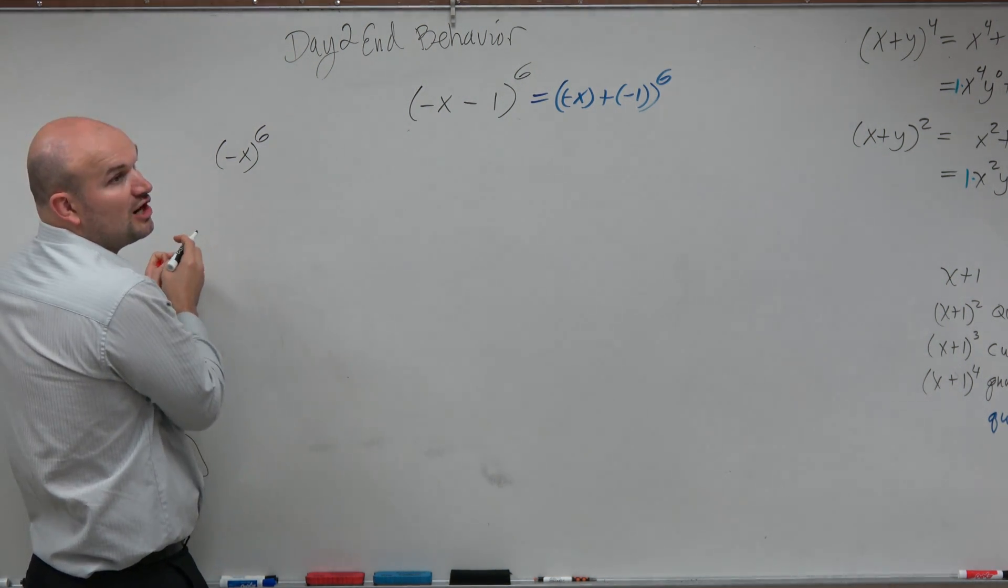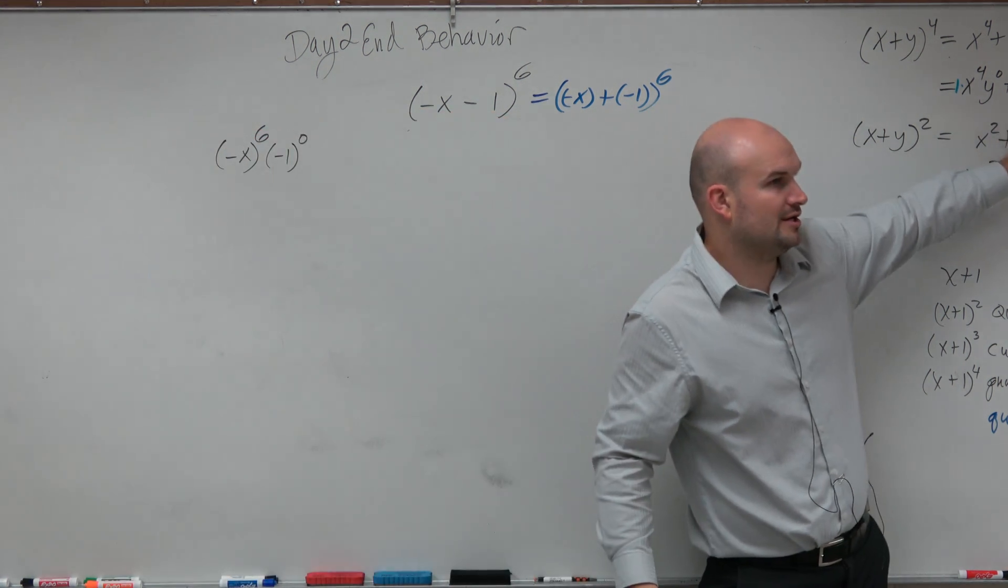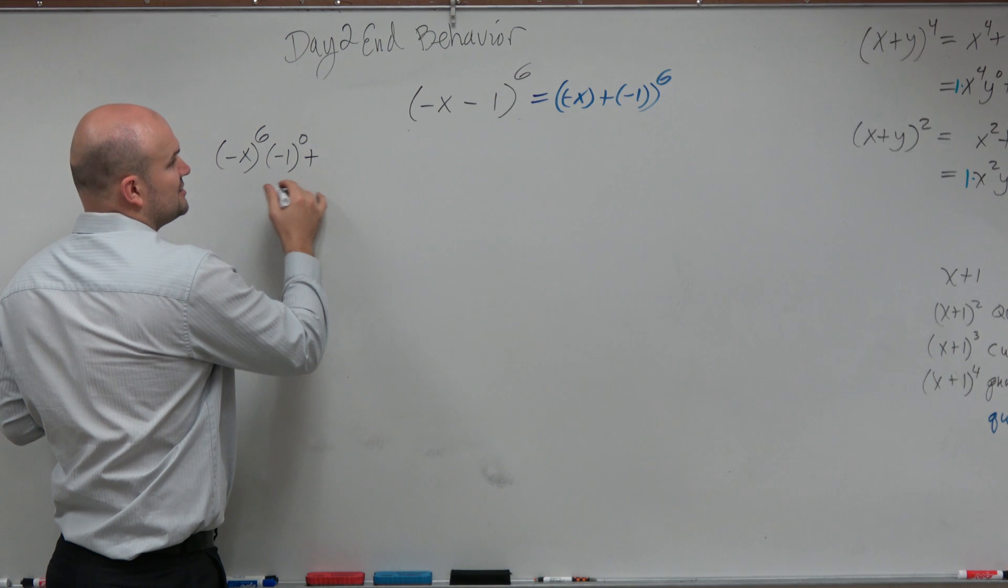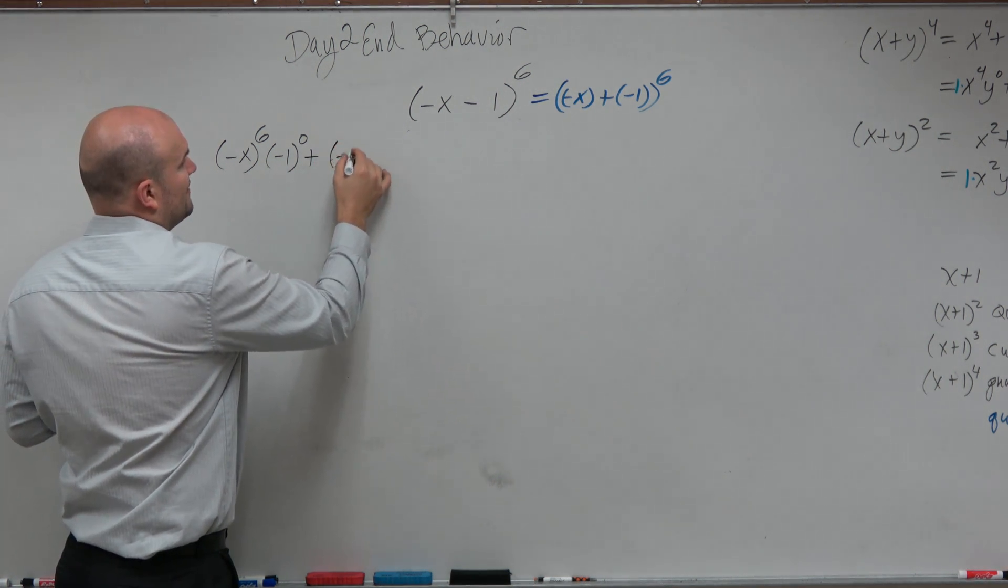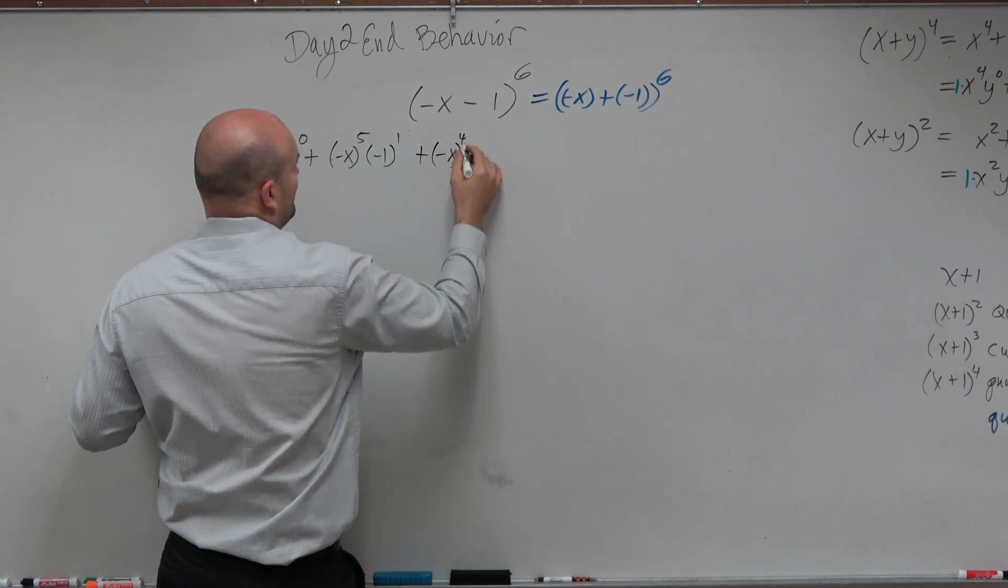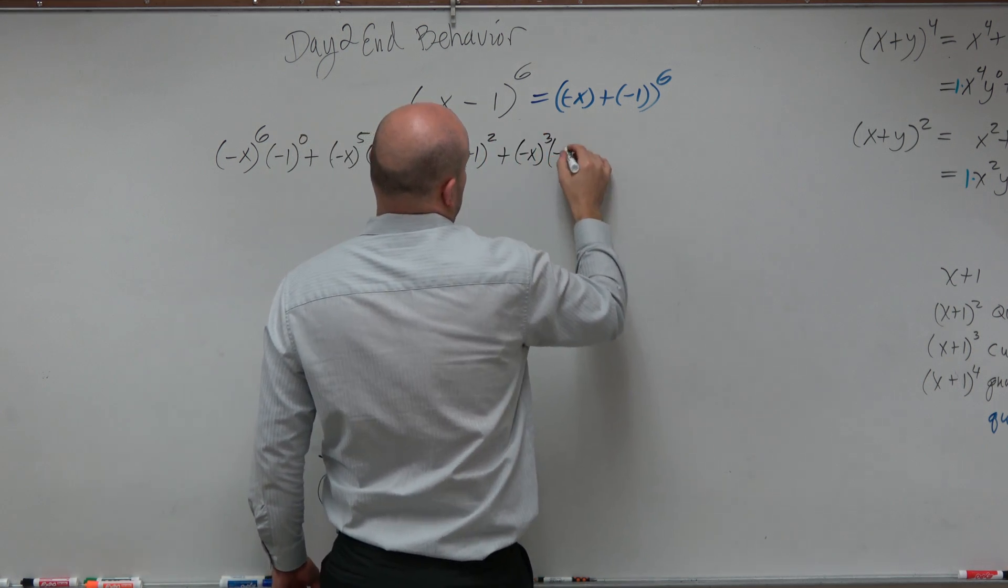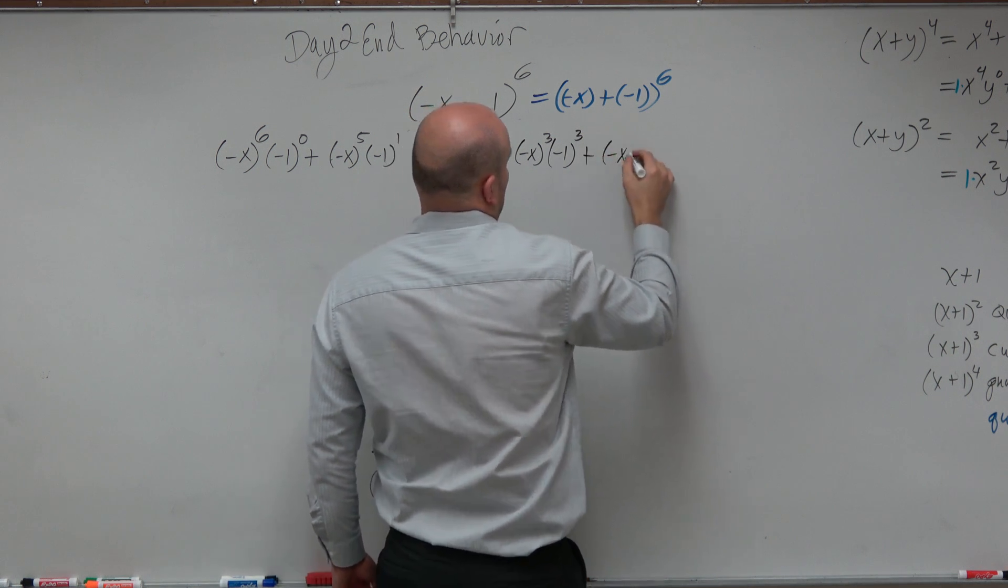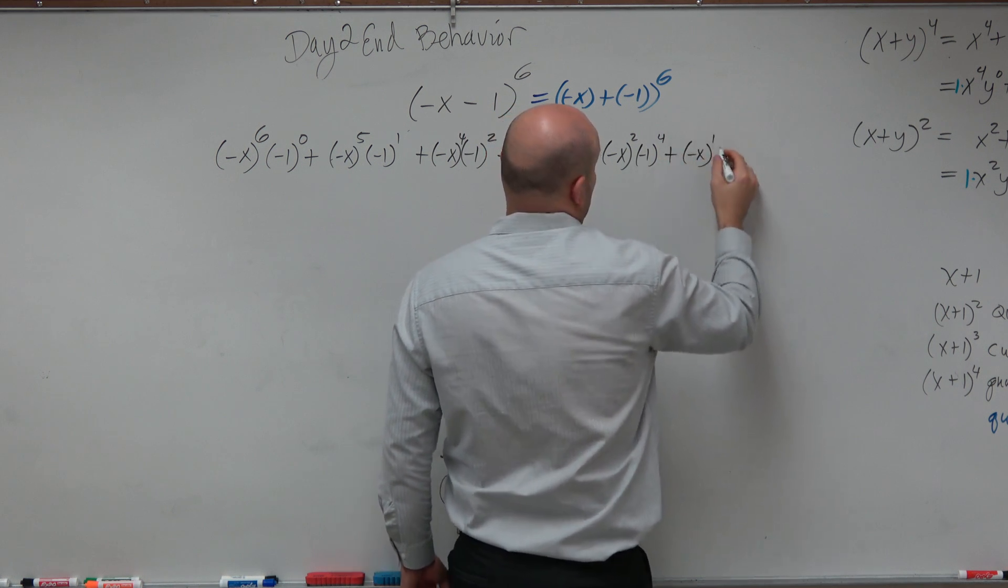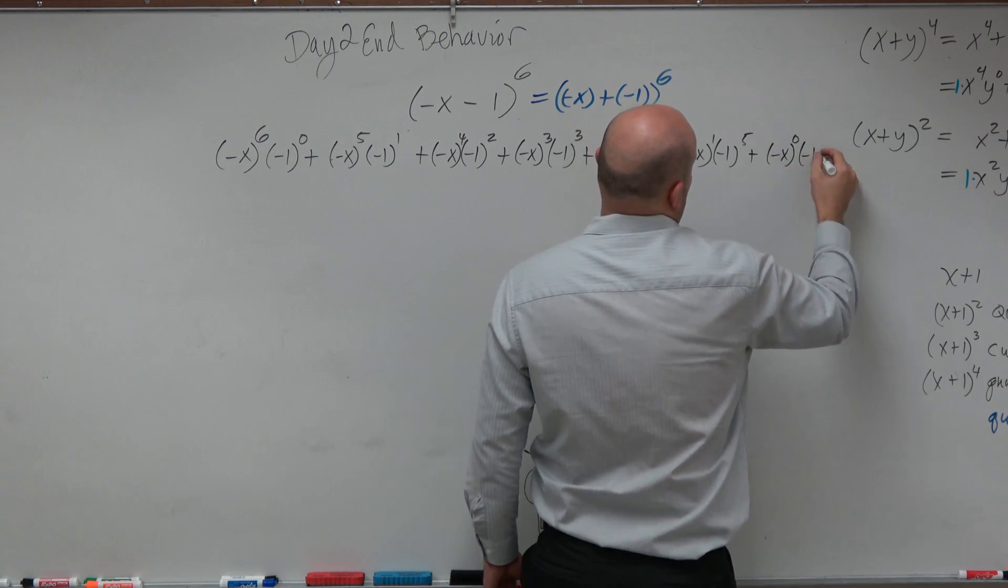And then the second term starts at to the zero, so that's going to be negative 1 to the zero power. And I'm basically kind of following along here. Now I'm not going to get to the coefficients just yet, I'll come back to that at the end. Then I'm basically just going to add each and every term. So now I'm just going to go in descending order. So negative x to the fifth, negative 1 to the first, plus negative x to the fourth, negative 1 squared, plus negative x cubed times negative 1 cubed, plus negative x squared times negative 1 to the fourth, plus negative x to the fifth, plus negative x to the zero, times negative 1 to the sixth.